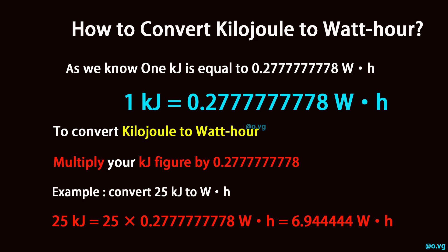Example: convert 25 kilojoule to watt-hour. 25 kilojoule is equal to 25 times 0.2777777778 watt-hour, which equals 6.94444 watt-hour.